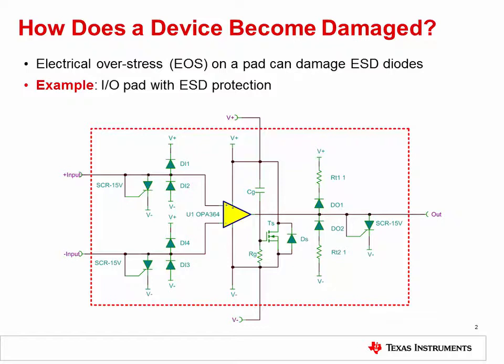This is just one example of how a device can become damaged. Of course, end equipment manufacturers typically want to create products which are as robust as possible and react to transient energy in a predictable way. To do this, products are tested in advance under harsh electrical conditions which simulate the real world.